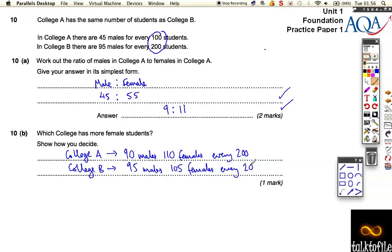And that's not quite enough. You need to just say that you need a quick sentence at the end. It just says College A has more females. Now this on its own wouldn't be good enough.